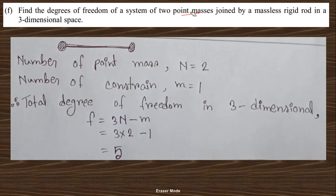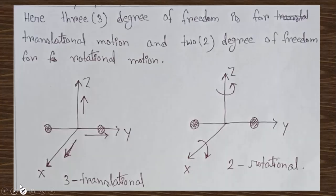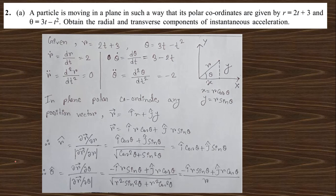Question 1f: Find the degrees of freedom of a system of two point masses joined by a massless rigid rod in three-dimensional space. The number of point masses is 2 and the number of constraints is 1. Using the formula 3N − M = 3(2) − 1 = 5. There are three translational degrees of freedom (along x, y, z) and two rotational degrees of freedom (rotation about two axes), giving a total of five degrees of freedom.